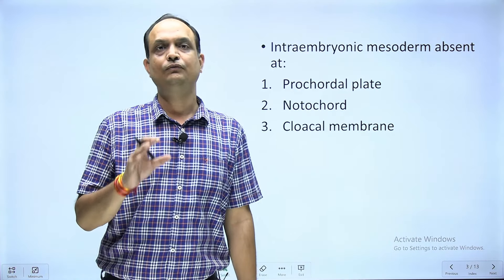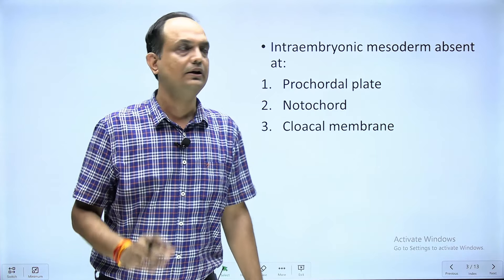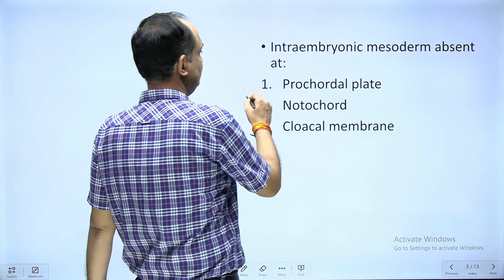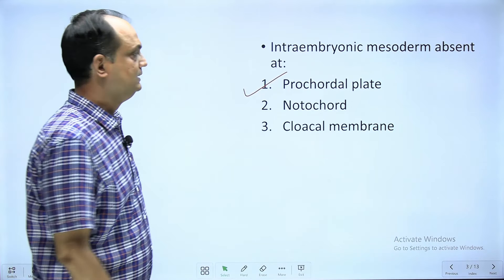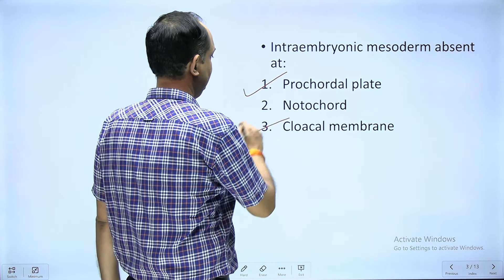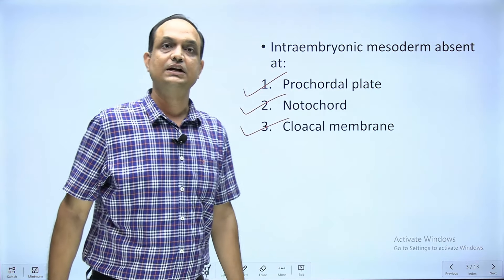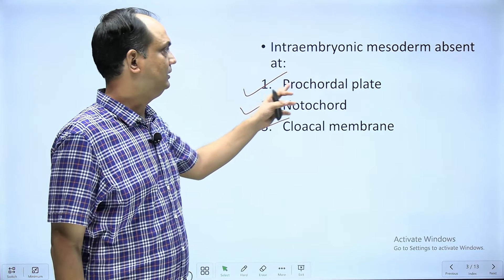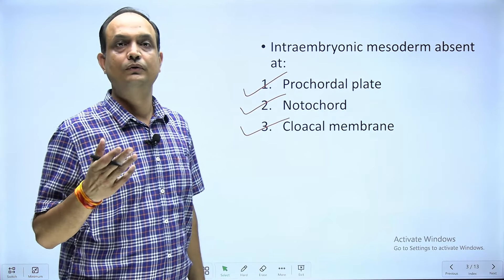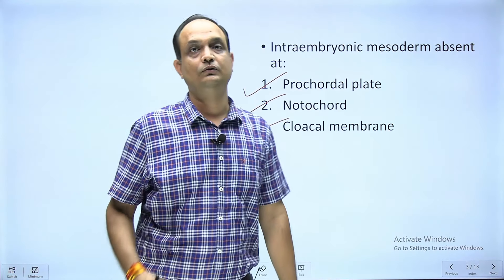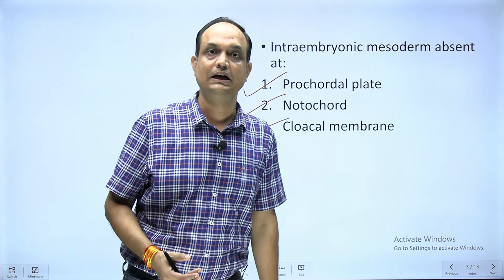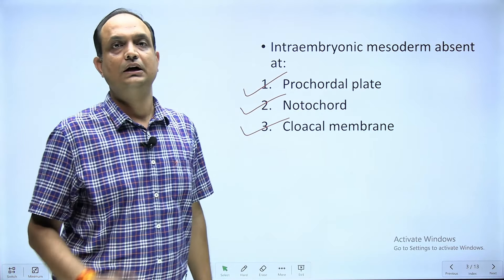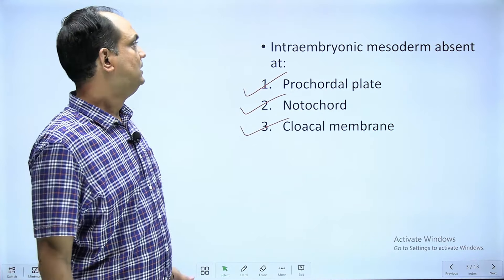There are a few places in the embryonic disc where intra embryonic mesoderm is absent. These are three sites: first, the pre-chordal (pro-chordal) plate; second, the cloacal membrane; and third, the notochord, which extends from the primitive streak to the pre-chordal plate. The pre-chordal plate forms the future oral cavity, the cloacal membrane forms the future anal canal, and these are areas where ectoderm is in direct contact with the underlying endoderm.